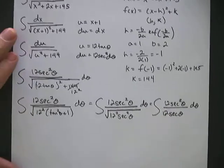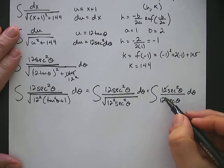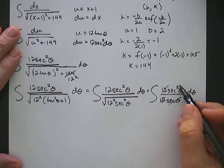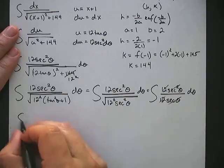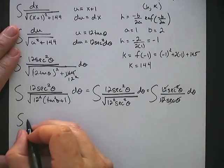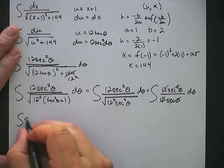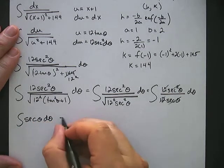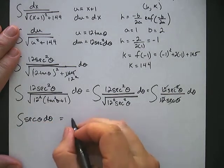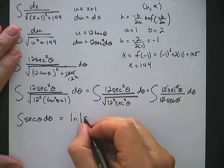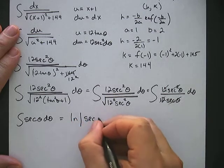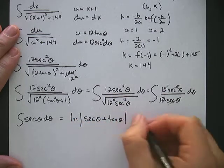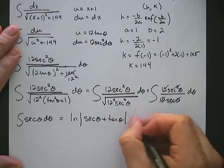Now we can reduce: the 12s cancel and one of the secants cancels, leaving us with the integral of secant theta d theta. That becomes ln of the absolute value of secant theta plus tangent theta, plus c.